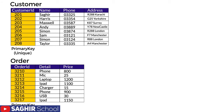Relationships in a database means we'll have more than one table. There are two tables: a customer table and an order table. Both have primary key attributes — customer ID as the primary key of the customer table, and order ID as the primary key of the order table.